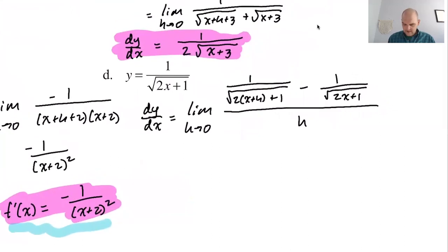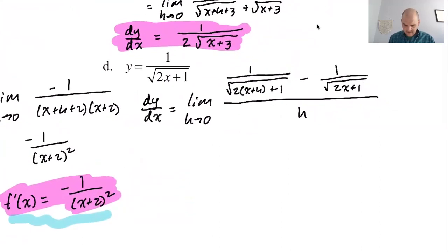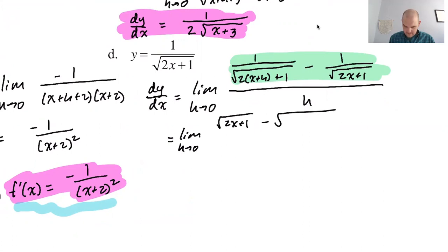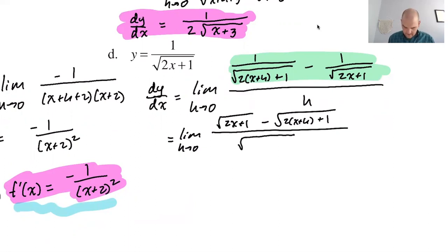When you do this, you focus on just the numerator. We've got just the numerator and we're going to clean this up. The common denominator is easy to find here because they're radical expressions — it's just the product of those. So the limit as h approaches zero of radical 2x plus 1 minus radical 2 times the quantity x plus h plus 1, all over the common denominator radical 2x plus h plus 1 times radical 2x plus 1.